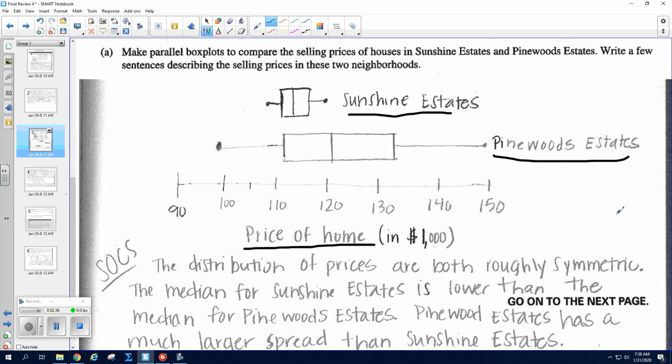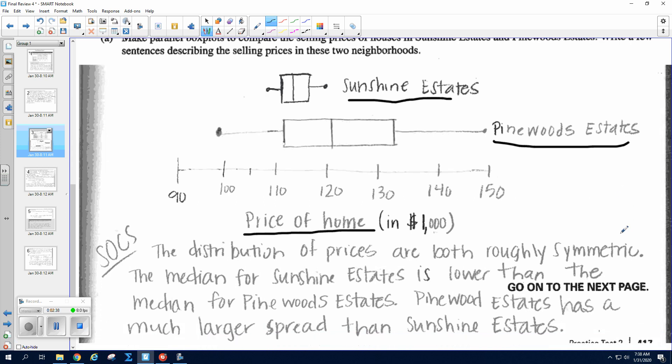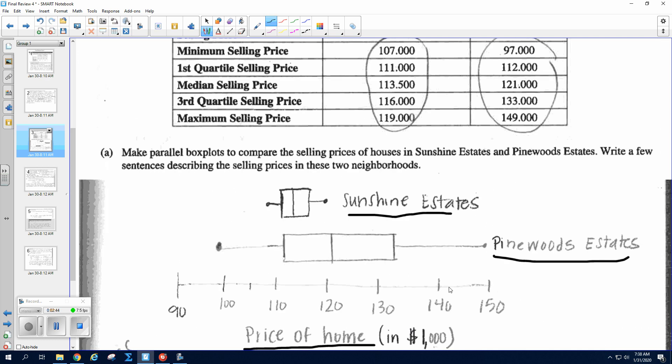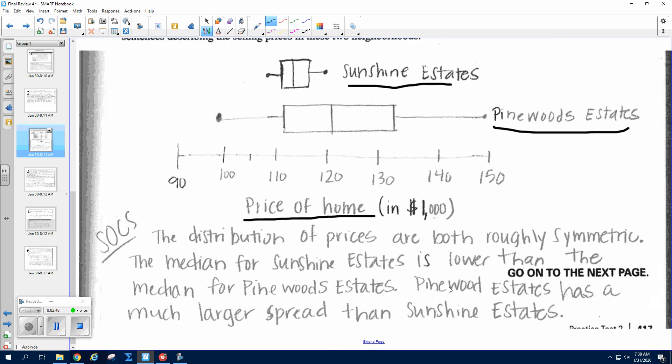Okay, your work matters on all the free response questions. So then we're just gonna do SOCS. So anytime they ask you to compare distributions, be sure you include something about shape, outliers, centers, and spread, unless there's no outliers. So first of all, they said the distribution of prices are both roughly symmetric. I suppose you could say this one is like slightly skewed right if you wanted to.